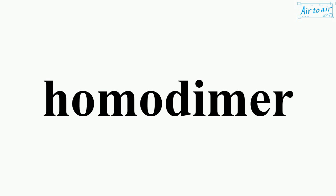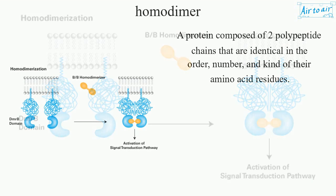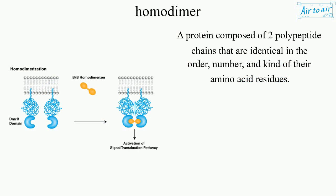HOMODIMER: A protein composed of two polypeptide chains that are identical in the order, number, and kind of their amino acid residues.